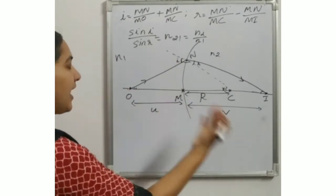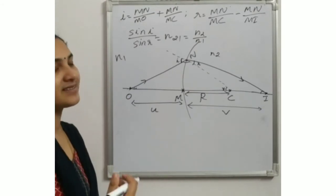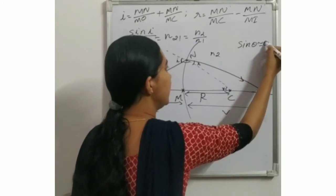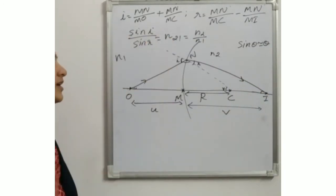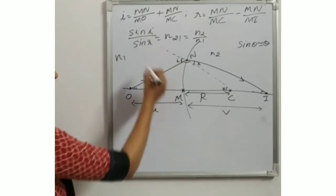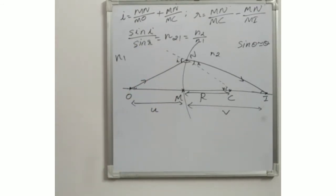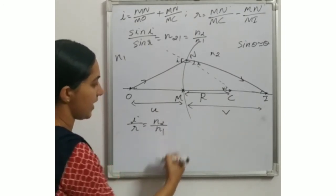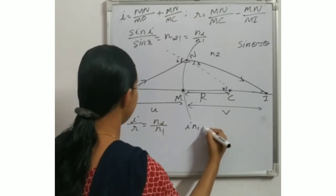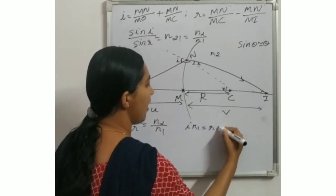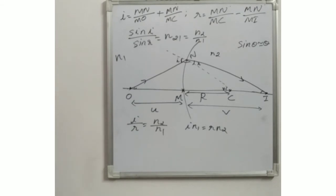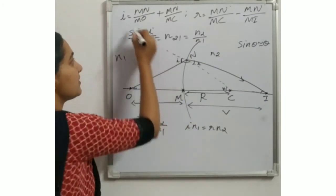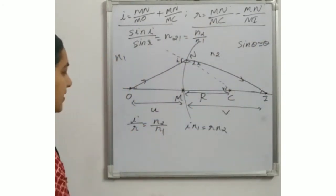As stated earlier, for small angles, sin θ is approximately equal to θ. So instead of sin I we can write I, and instead of sin R we can write R. Therefore, I/R = N2/N1, or equivalently, I·N1 = R·N2.